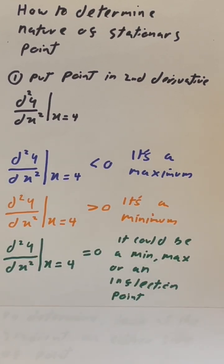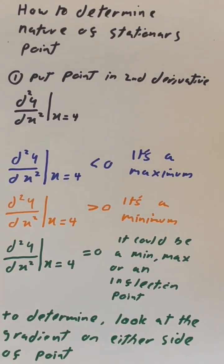If it is 0, it could either be a maximum point, a minimum point, or an inflection point. The way we determine is we simply look at the gradient on either side of the point.